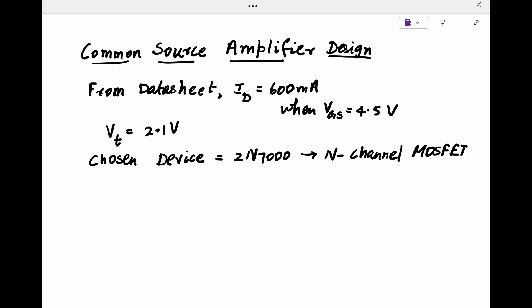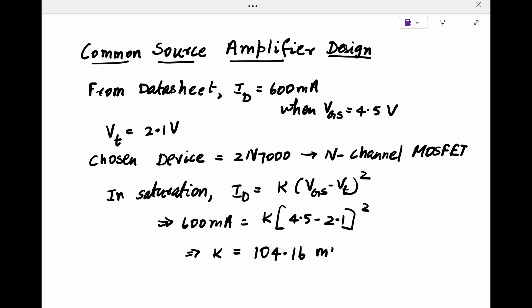In saturation or the amplifying region of the MOSFET, ID is K times the square of the effective voltage, where K is half times mu and Cox W by L. The effective or overdrive voltage is the difference between the applied gate to source voltage and the threshold voltage. Substituting the values discussed above, we get a K value of 104.16 milliamps per volt.